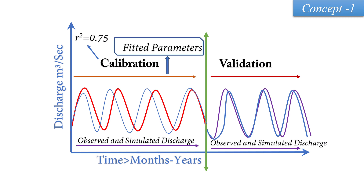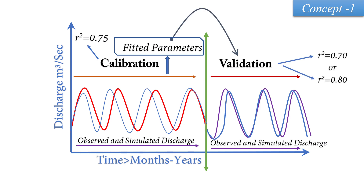That R-squared means we have received the fitted basin parameters that we need to write into SWAT at a later stage. From those same fitted parameters, we run the model on the validation data. We simulate the model and again compare the simulated values and observed values and validate it.